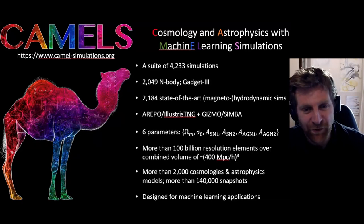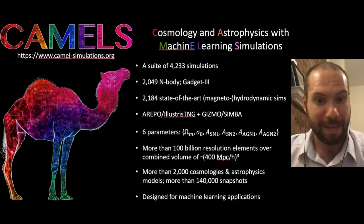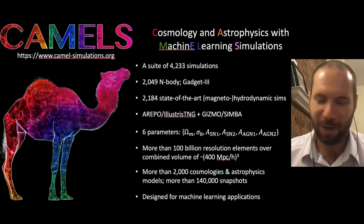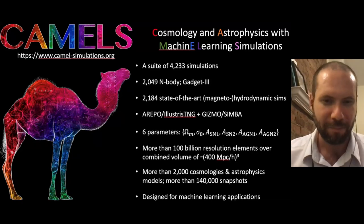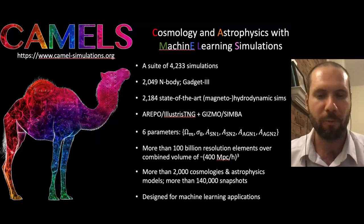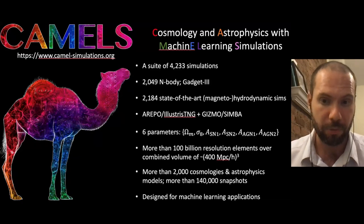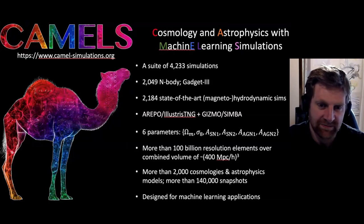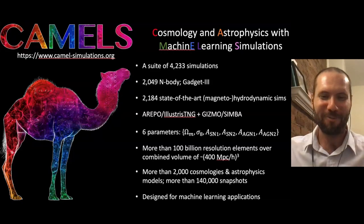Can all interesting physics really be captured by two parameters each? The answer is probably no, and that's a conversation we're still having. In principle, we'd like to vary all parameters - in IllustrisTNG and SIMBA there are around 30. The problem is it's incredibly hard to explore a 30-dimensional parameter space and would require many more simulations than we can afford. So in CAMELS we decided to stick to the parameters that will have the largest effect on cosmological observables. We're planning to vary more parameters for CAMELS 2 simulations.